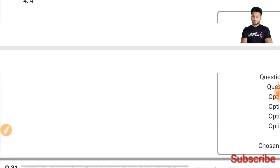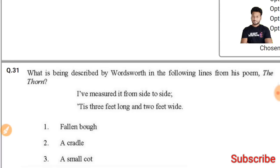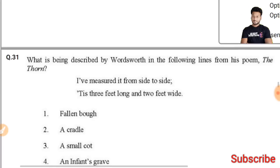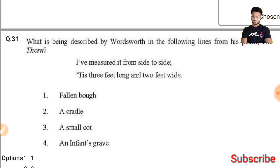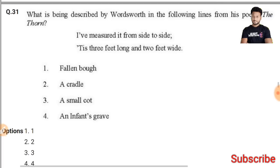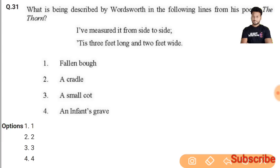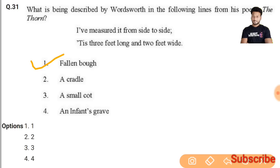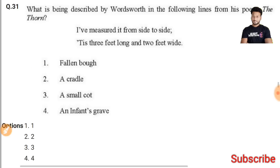Question 31: What is being described by Wordsworth in the following lines from his poem 'The Thorn'? The lines read: 'I have measured it from side to side: 'Tis three feet long, and two feet wide.' The right answer is a mossy mound or fallen mound — the first option is the right answer.